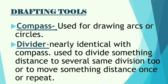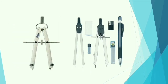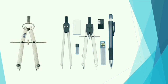Next are the compass and divider. The compass is used for drawing arcs or circles. The divider is nearly identical to the compass and is used to divide a given distance into several equal divisions, or to transfer a distance repeatedly. They are almost identical in appearance and use. The compass can be used as a divider and the divider can also be used as a compass.